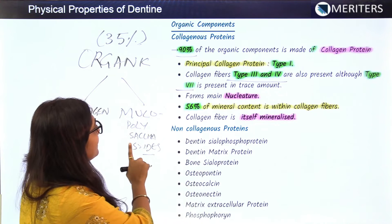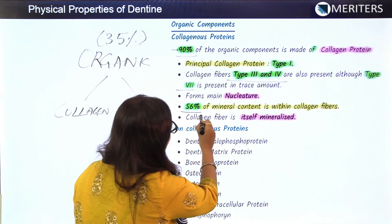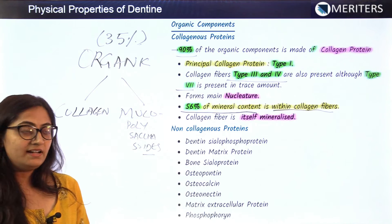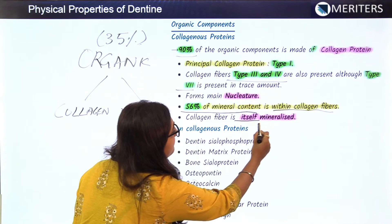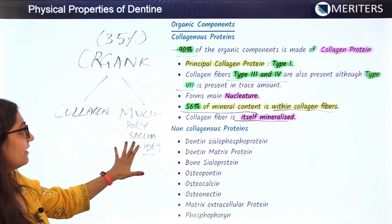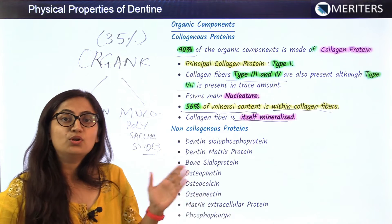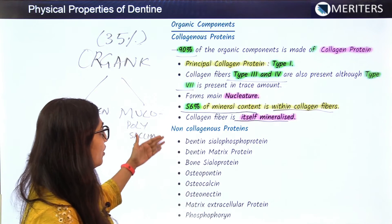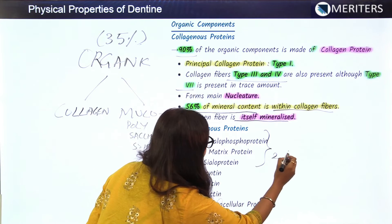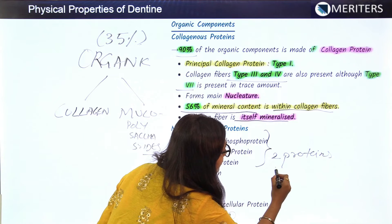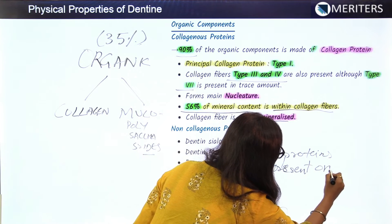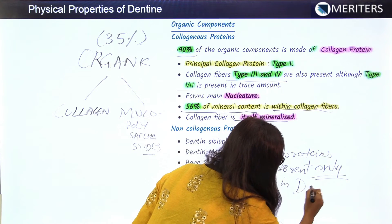Type 1 collagen fibers contain 56% of the mineral content within the fibers themselves and form the main architecture of dentine — the collagen fiber is itself mineralized. The non-collagenous proteins are the mucopolysaccharides, divided into proteoglycans and glycoproteins. Two proteins are present only in dentine.